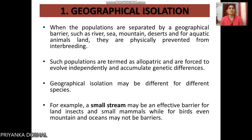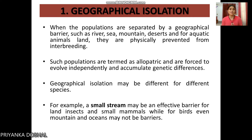Now let's discuss geographical isolation. When a population of a particular species exists in a forest, and a river forms through that forest, the forest is divided into two parts. As a result, the species in each part are geographically isolated from each other. Because these species cannot travel across the ground barrier, they cannot interbreed — except in the case of birds.